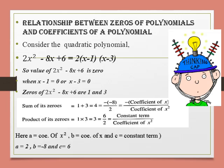Now let us take the product of its zeros: 1 into 3 equals 3, which we write as 6 divided by 2. Here 6 is the constant term and 2 is the coefficient of x square. So again we get the relation: constant term upon coefficient of x square. Here, a means the coefficient of x square, b is the coefficient of x, and c is the constant term. So for this polynomial, a is 2, b is minus 8, and c is equal to 6.